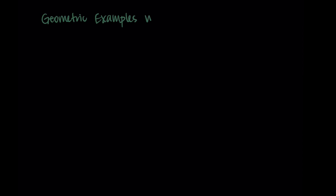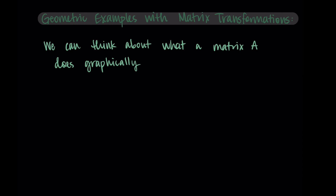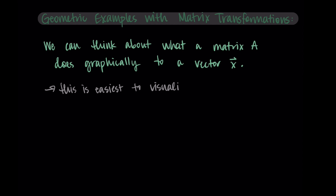Hi, and welcome back. In this video, I'm going to finish up our discussion of matrix transformations by talking about some geometric examples. What I mean by this is that we can think about what a matrix A does graphically to a vector x — how is it moving it or in what way is it transforming it? This is going to be easiest for us to visualize when we're in two-dimensional spaces, so if we have a matrix transformation T that starts in R2 and goes to R2.